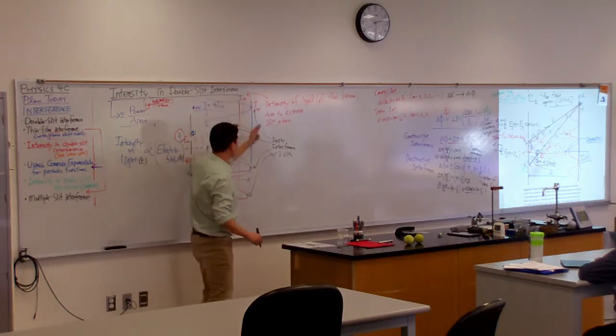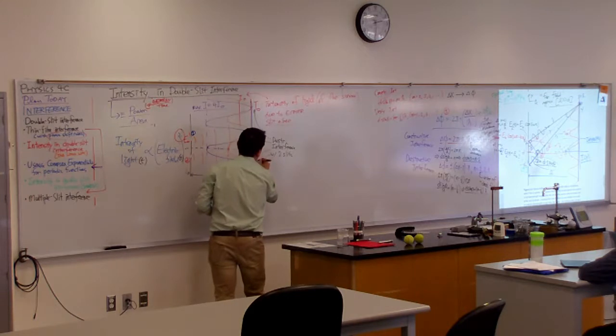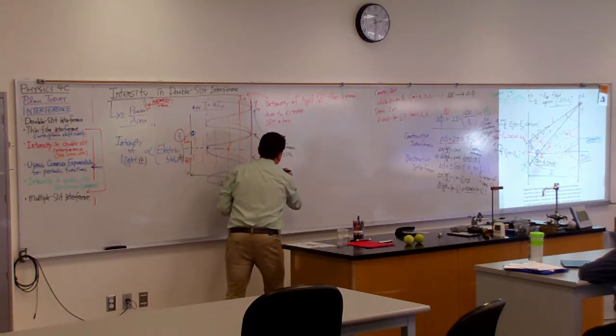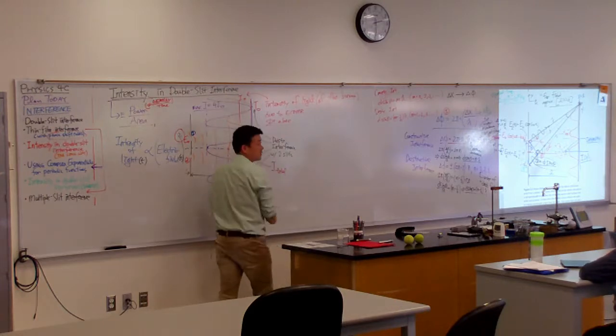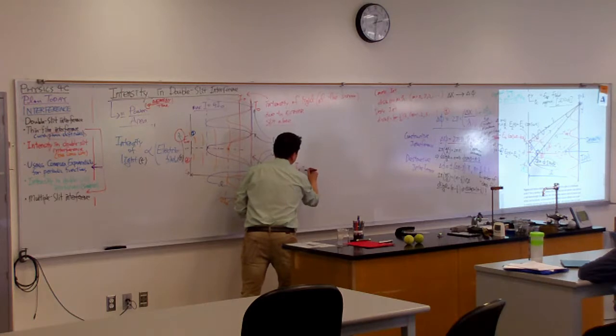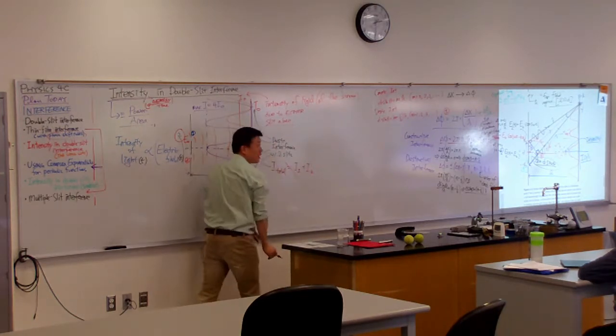So on this screen, what you want to describe is the total intensity. If you were trying to say that intensity due to one slit plus intensity due to the other slit, that would be wrong. That's not right.